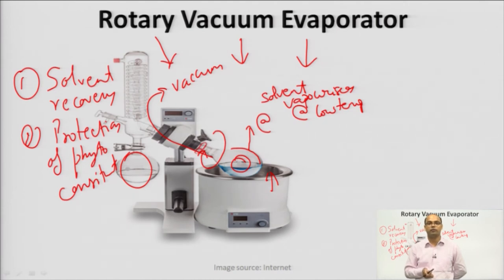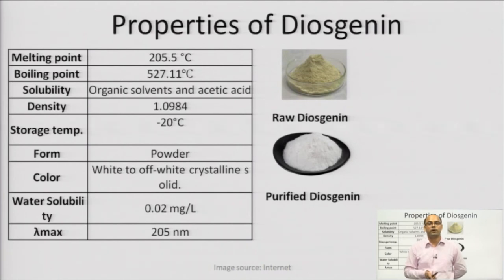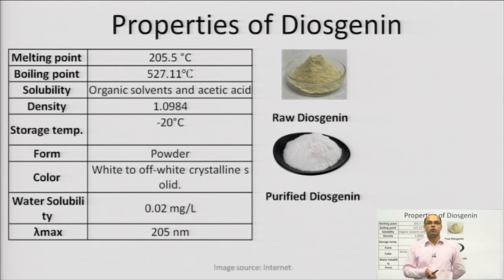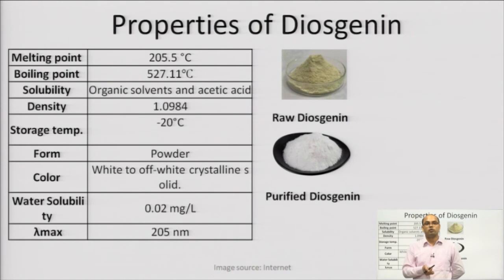The physical properties of diosgenin include: melting point of 205.5°C, boiling point of 527.11°C, density of 1.0984, and storage temperature of minus 20°C. It is soluble in organic solvents and acetic acid but insoluble in water — only 0.02 mg of diosgenin can be solubilized in 1 liter of water. It occurs as a white crystalline powder or crystals, depending on the extraction method.